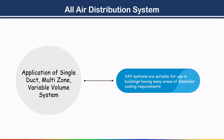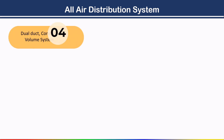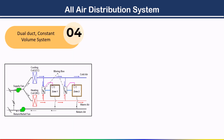The fourth and final type of all-air distribution system is the dual duct system — dual duct constant volume or variable air volume system. Two ducts are used: one to supply conditioned (cold) air to each zone and one to supply warm air to each zone. Because two ducts are used, this system is called a dual duct system.